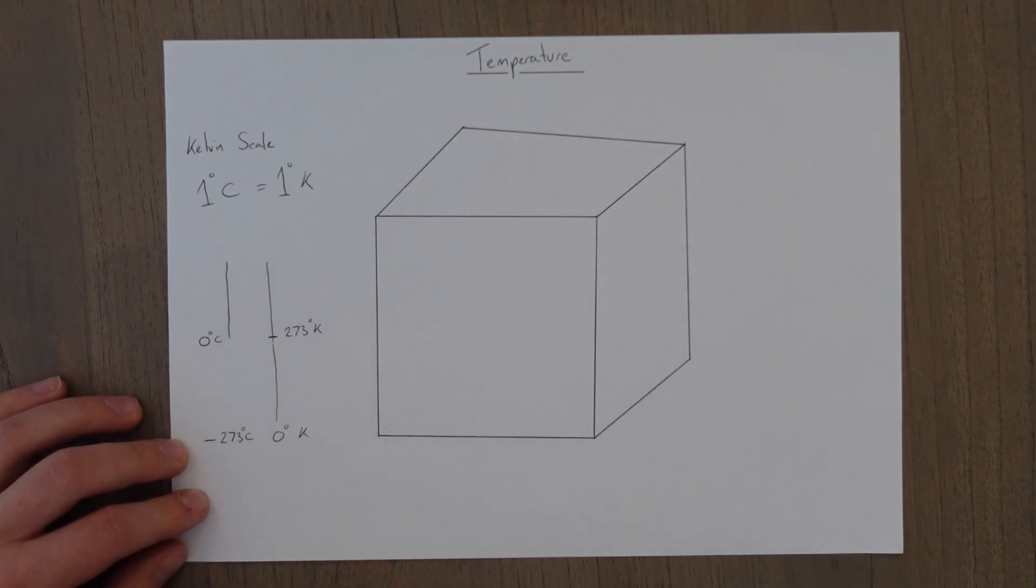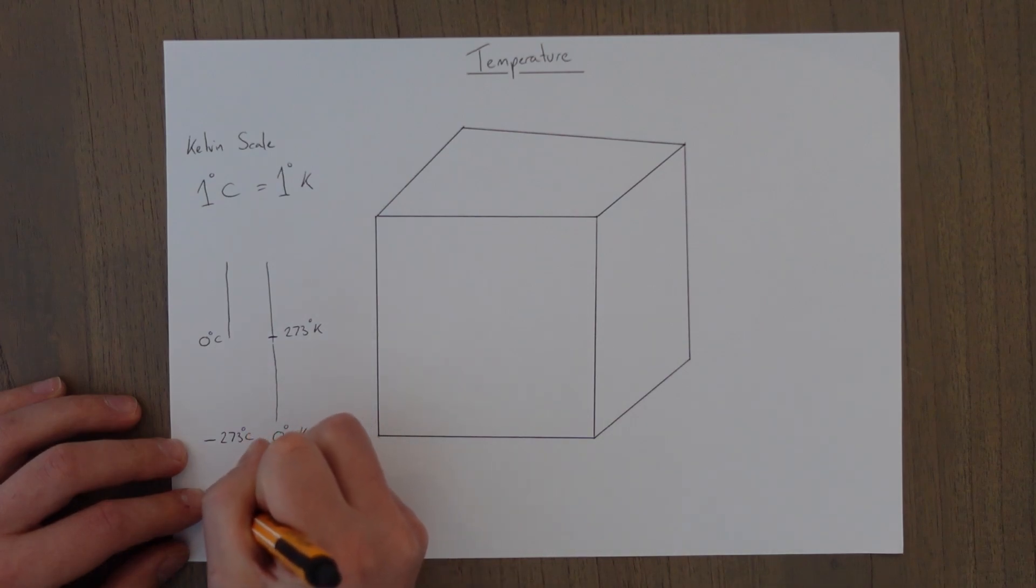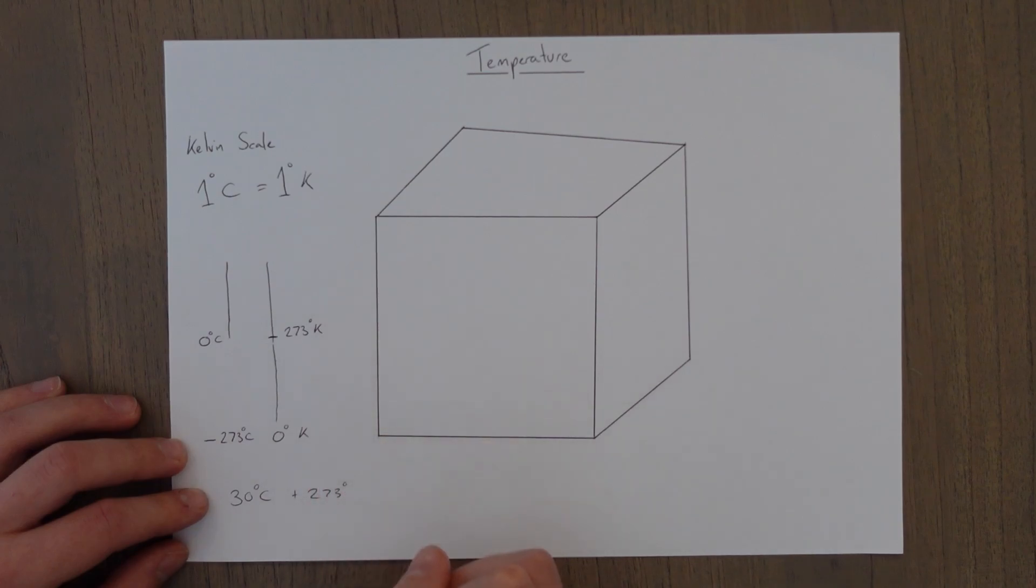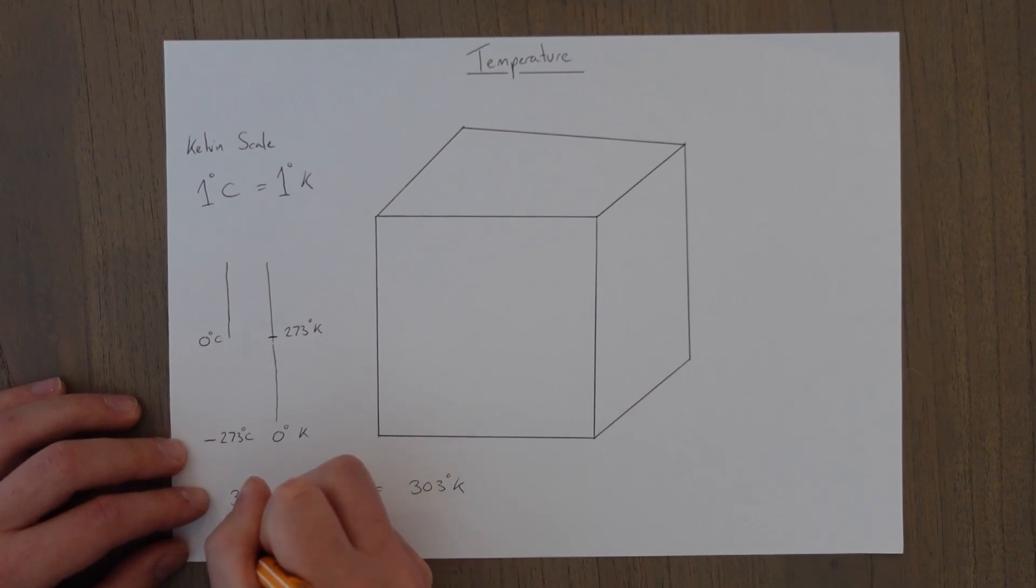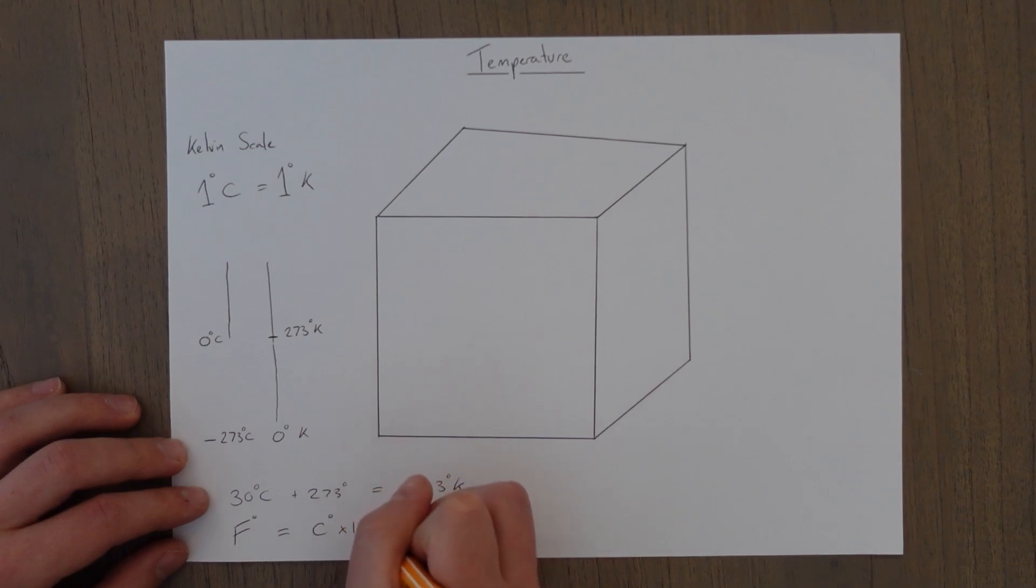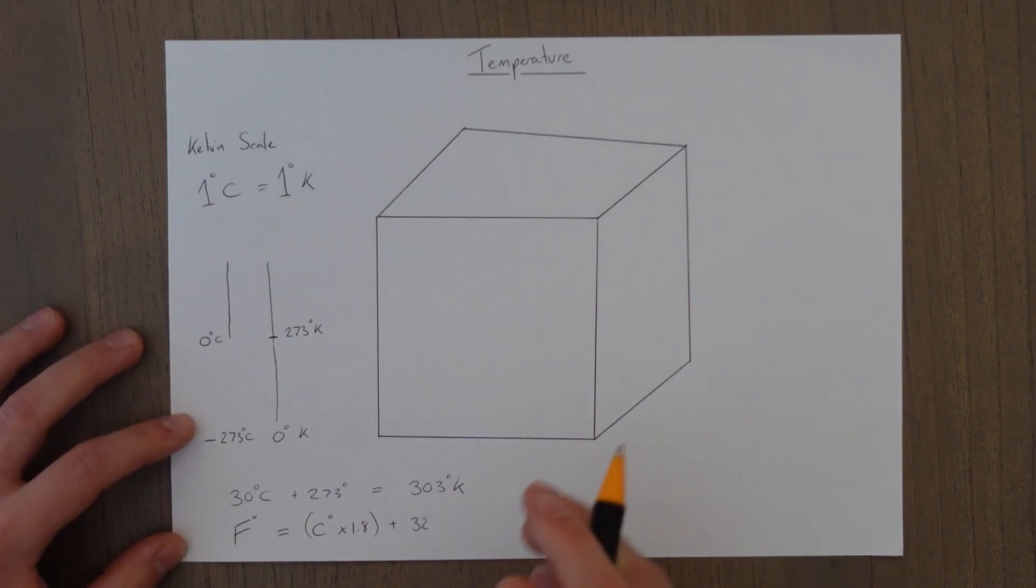So to convert from Celsius to Kelvin, you simply add 273. For example, 30 degrees C in Kelvin, just add that 273 and you come up with 303 degrees Kelvin. Very simple to convert between the two. Fahrenheit is also still sometimes used by people. If you ever have to convert between Fahrenheit and Celsius, the degrees in Fahrenheit equals the degrees in Celsius times 1.8 and then you add on 32.